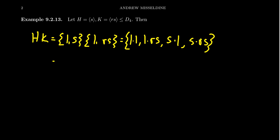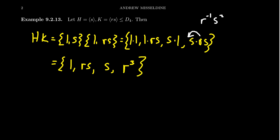With the identity it doesn't make much difference: 1·1 = 1, 1·rs = rs, and s·1 = s. For s·rs, recall that in the dihedral group, if you need to commute a rotation past the reflection s, you take the inverse of r. So s·rs = r⁻¹s² = r³·1 = r³, since r⁻¹ = r³ in D4 and s² is the identity. So HK = {1, rs, s, r³}.